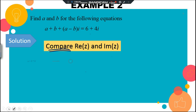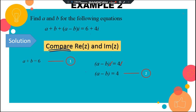Our real part gives us a plus b equal to 6, and our imaginary part gives us a minus b equal to 4. These are our two equations. When you have two unknowns — in this case a and b — you always need two equations in order to solve them.